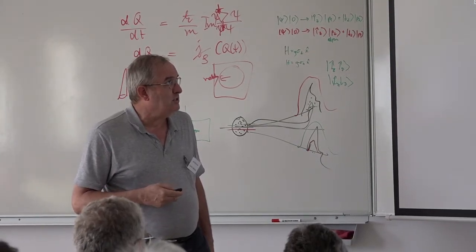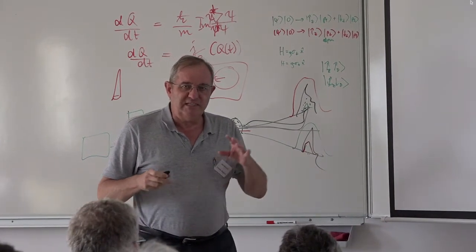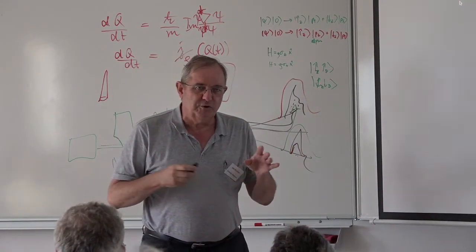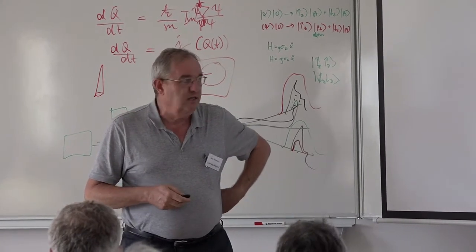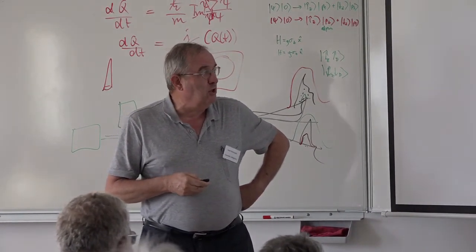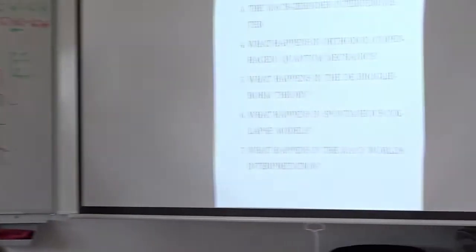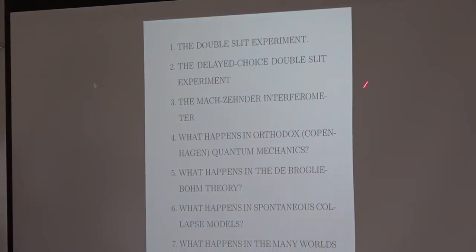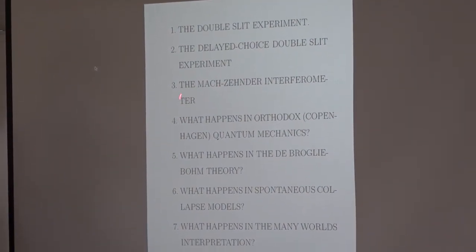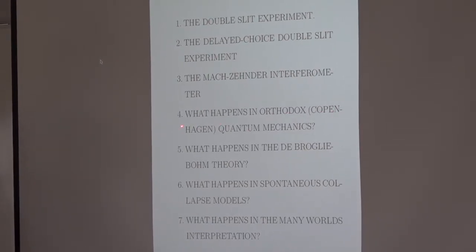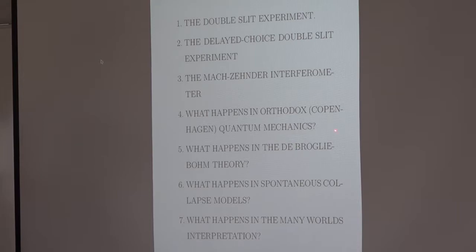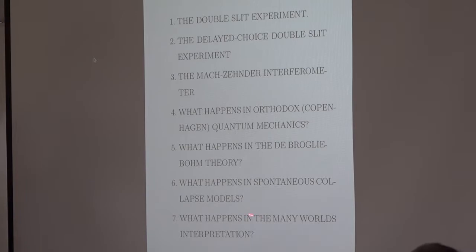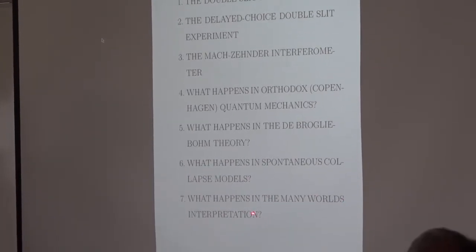I will discuss things where there'll be some overlap with what I said this morning and what Matthias said this afternoon, so certain parts I can go over relatively quickly. I want to explain the double slit, which you haven't seen many times, the delayed choice double slit which you haven't heard about today, the Mach-Zehnder interferometer, which is a neater version of the double slit.